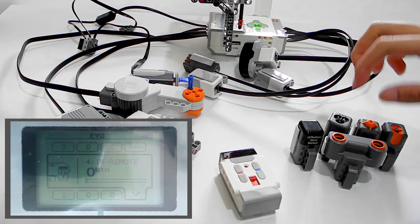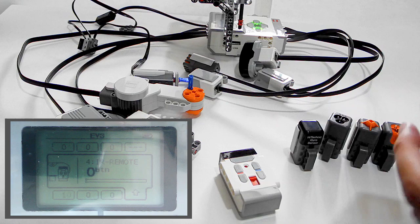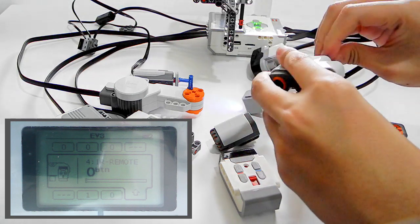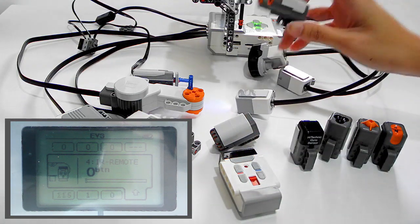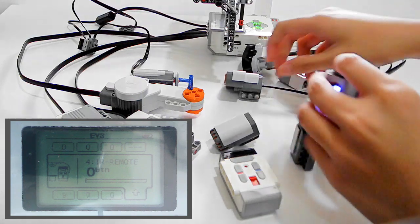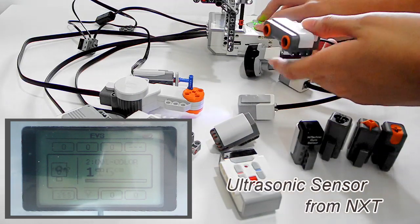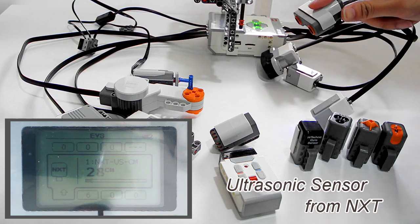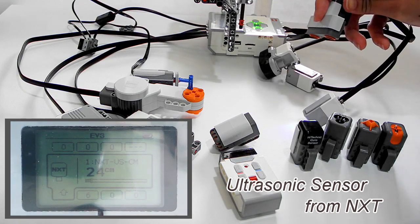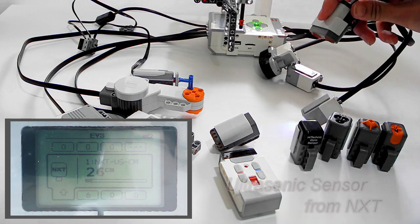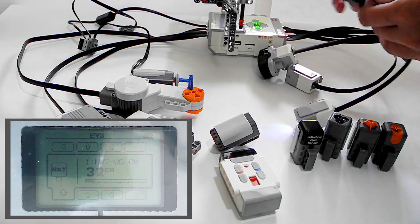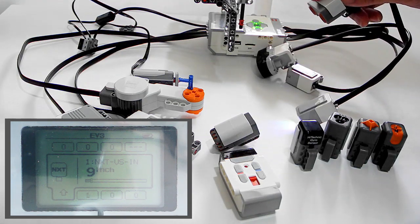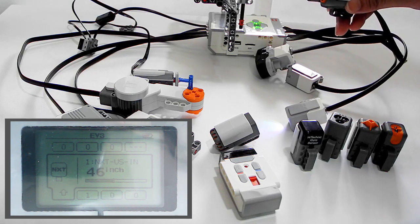And then the next sensor is the ultrasonic sensor. You can see it's also used to detect the distance. It's about 20 centimeters between the obstacle and the sensor. This is also used to measure in inches, now it's 9 inches or 10, 14, or whatever.